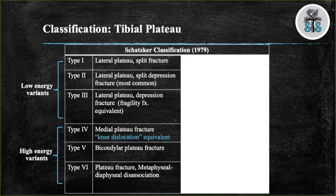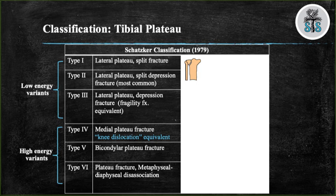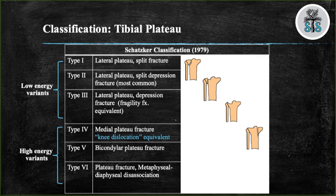The Schatzker classification defines tibial plateau fractures into six subtypes. Type 1 is a lateral split — the most common in younger patients whose cancellous bone can still prevent depression. Type 2 is a lateral split with depression — most common in the older population. Type 3 is a pure depression of the lateral plateau, considered a fragility fracture equivalent. Type 4 is a medial plateau fracture, equivalent to a knee dislocation with the highest association with neurovascular and ligamentous injury. Type 5 is a bicondylar fracture. Type 6 is a dissociation of the metaphysis and diaphysis. Types 1 through 3 are low energy variants; types 4 through 6 are high energy variants.